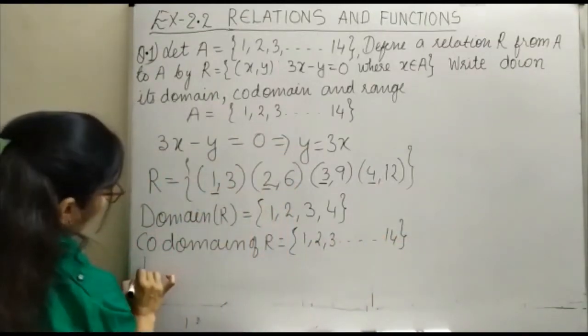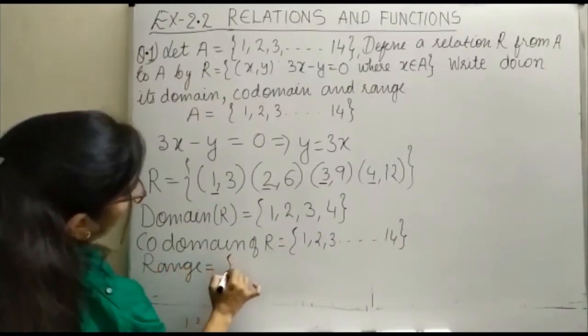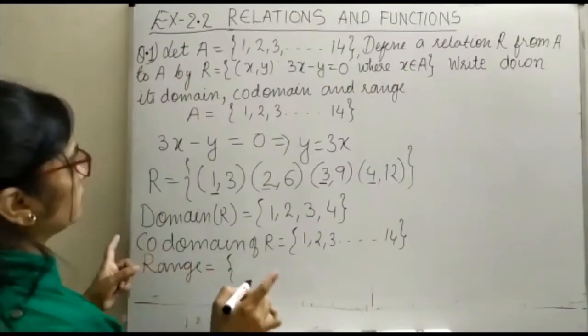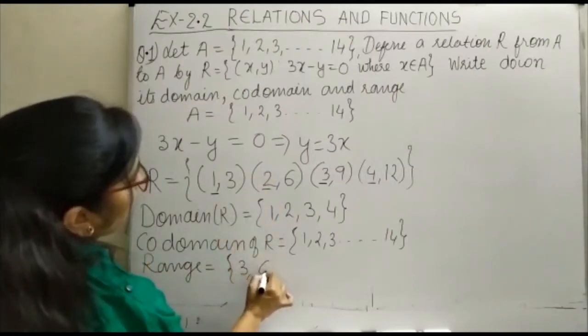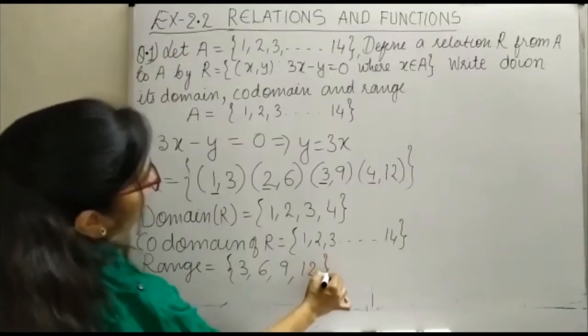Then comes range. Your range is equal to collection of second element of the order pair, that is 3, 6, 9 and 12.